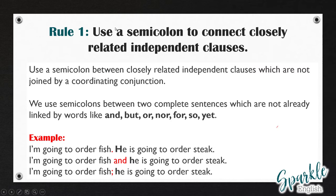The first rule is that we can use a semicolon between closely related independent clauses which are not joined by a coordinating conjunction. So we use semicolons between two complete sentences which are not already linked by words like and, but, or, nor, for, so, and yet. Here are three different examples of how we could write these sentences.